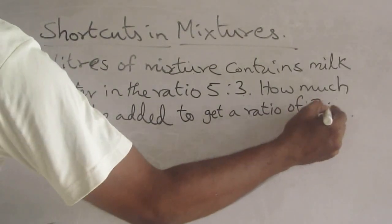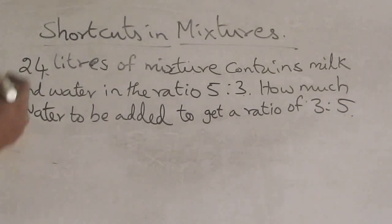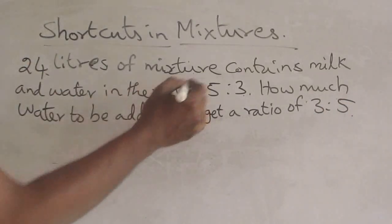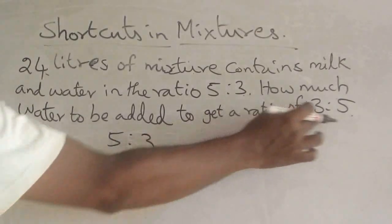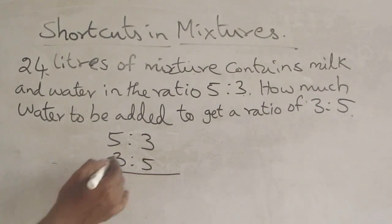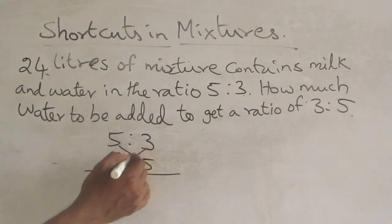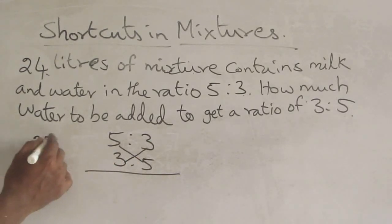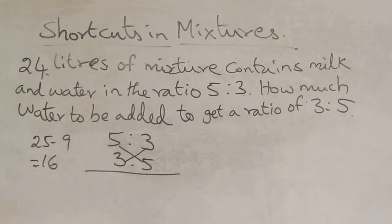The concept is very simple. The first ratio is 5 is to 3 and the second ratio is 3 is to 5. Cross multiply: 5 into 5 is 25, and 3 into 3 is 9. What is 25 minus 9? It is 16.